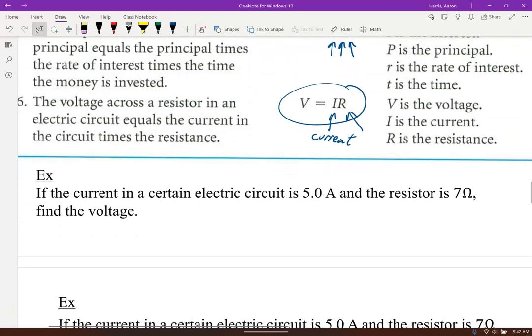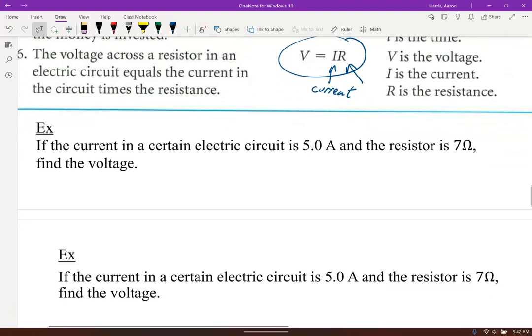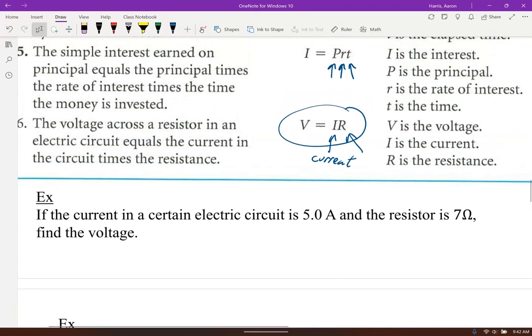Let's do that one first. If the current in a certain electrical circuit is five amperes and the resistor is seven ohms, find the voltage. Well, we're going to use that last one. Voltage is the current times the R resistance. So we got V equals I, five amperes times seven ohms.